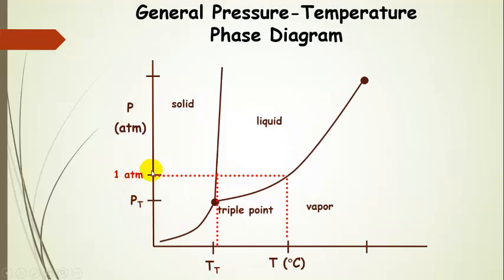Now, when we're at one atmosphere, that's a very common external pressure because, of course, that's atmospheric pressure. So if we take our dotted line and we go over to the solid liquid line and also to the liquid vapor line, and then we drop down straight down from there, we're going to get two very special temperatures.